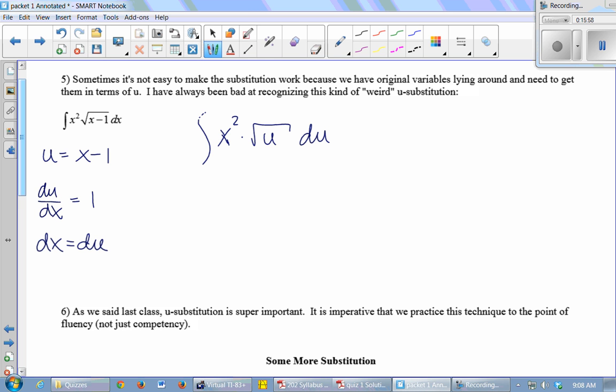u plus 1, yeah. If u is x minus 1, that means that x is u plus 1, right? Just a little tiny manipulation. And then I replace my x. So this becomes the integral of (u + 1)² times u^(1/2) du.